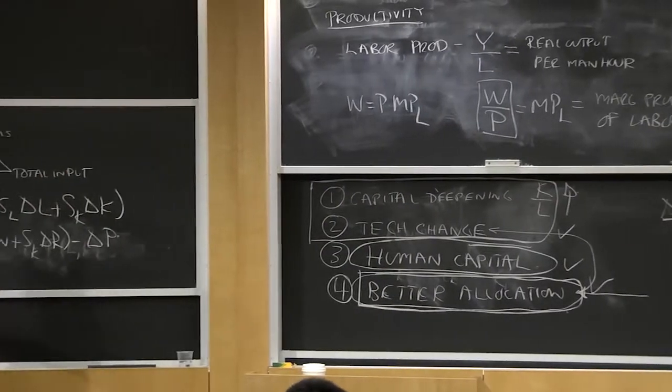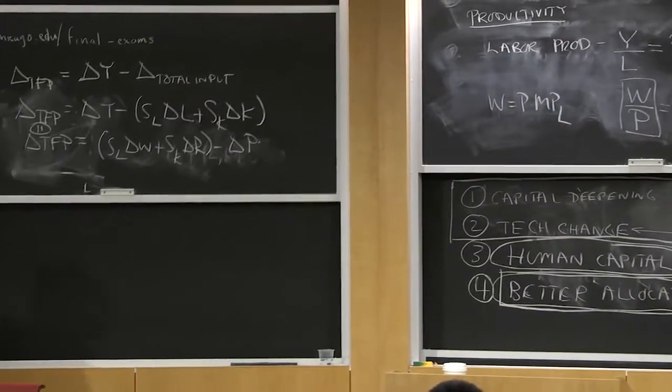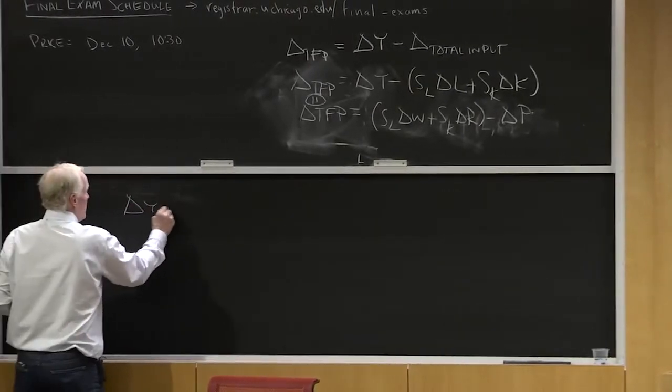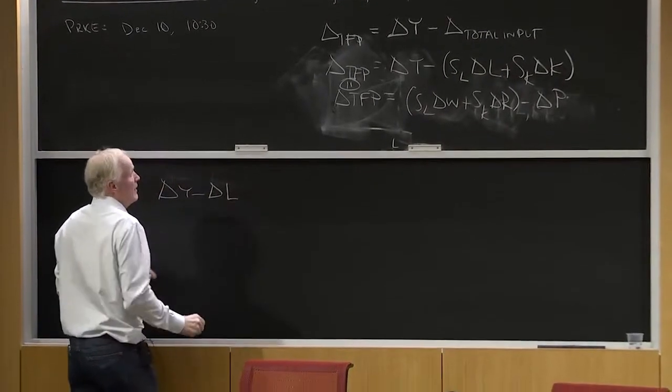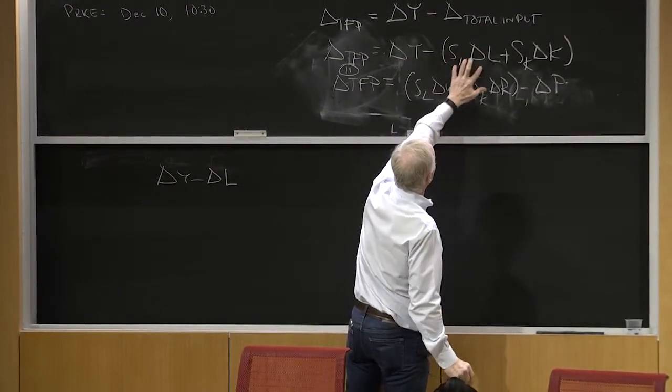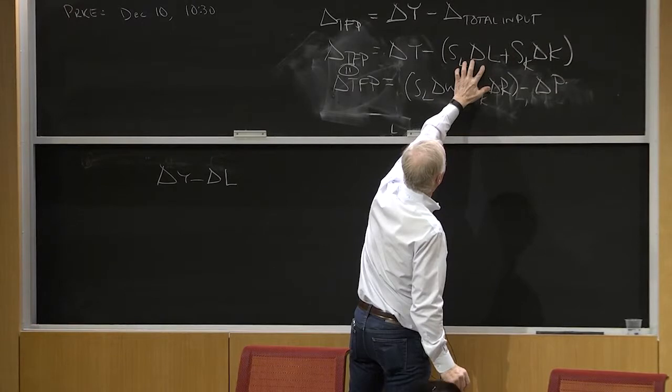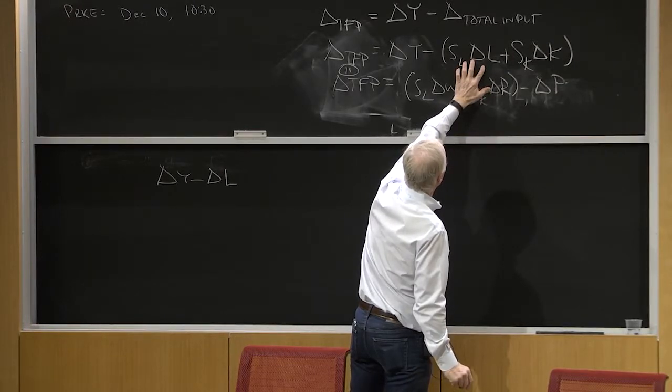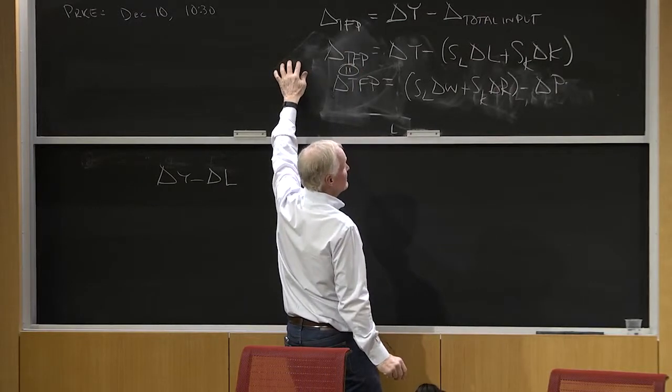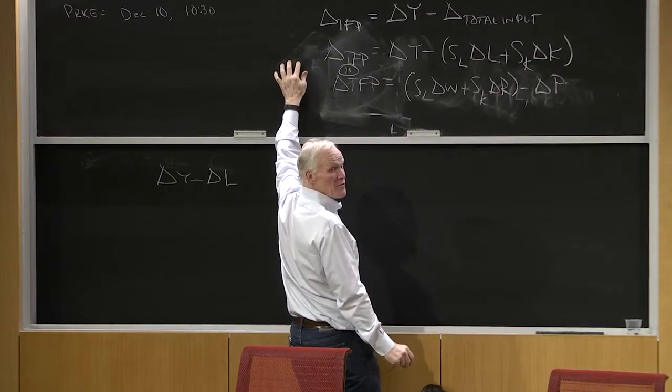Now you can rewrite this equation a couple ways. Is delta Y minus delta L on this side? Well, if I want a minus delta L here, I've got to subtract from this side an SK delta L. Everybody agrees?